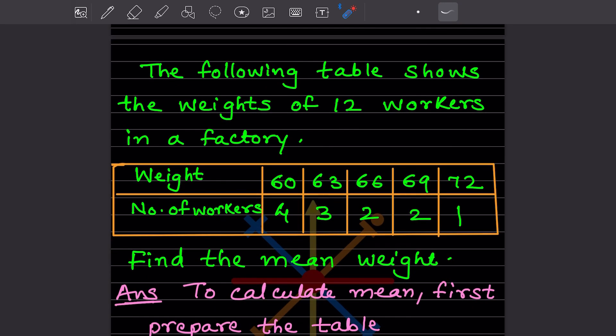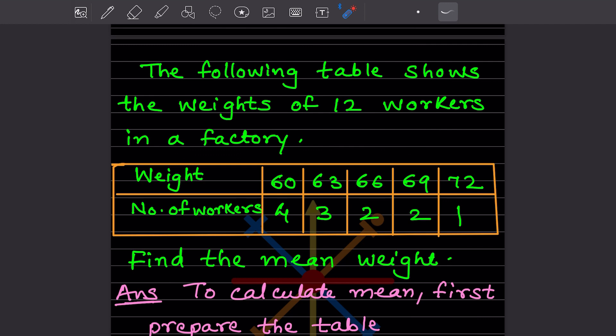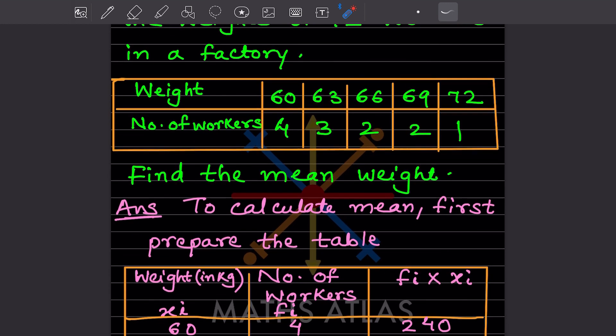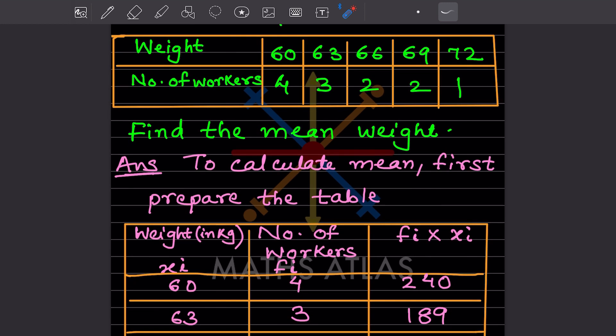Now here, this is the second problem which says the following table shows the weights of 12 workers in a factory. This is the table given. We have to find the mean weight. How to find the weight when the table is given? To calculate mean, first we have to prepare the table.